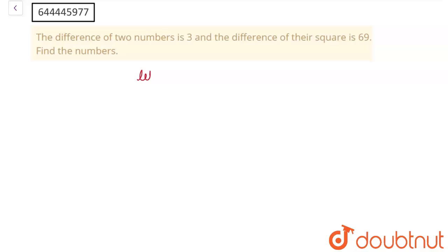So let one number be x and let the second number be y. Therefore, according to the question, the difference of two numbers is three. So let's write it down: y minus x is equal to three.